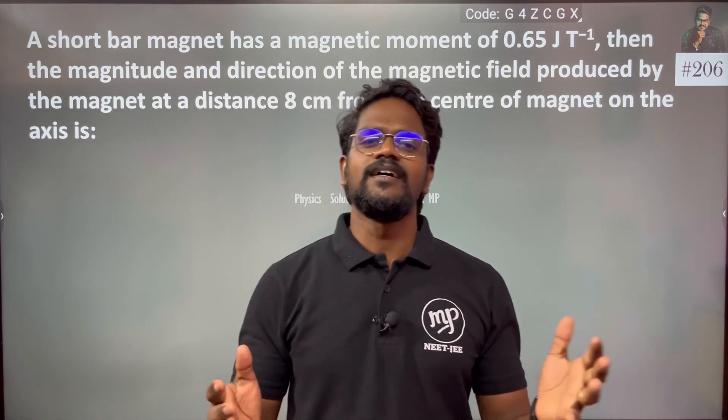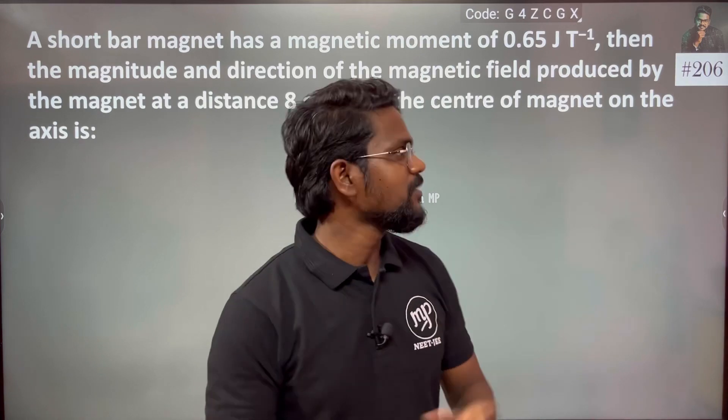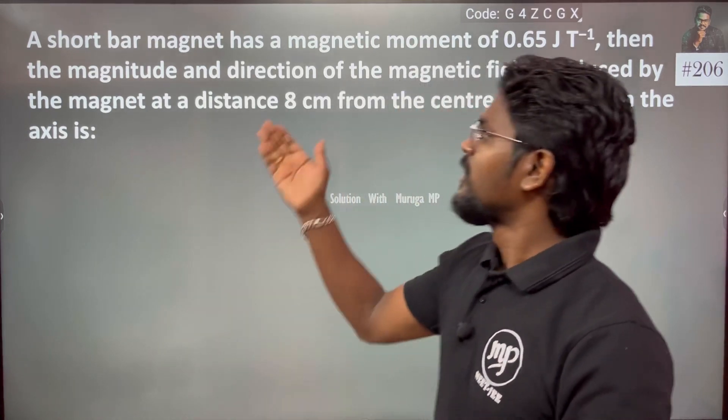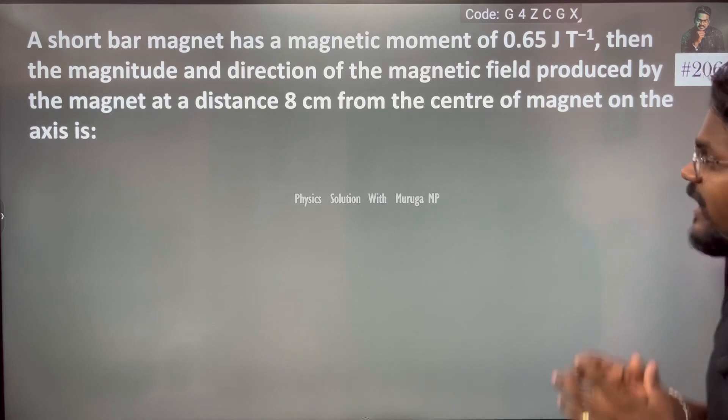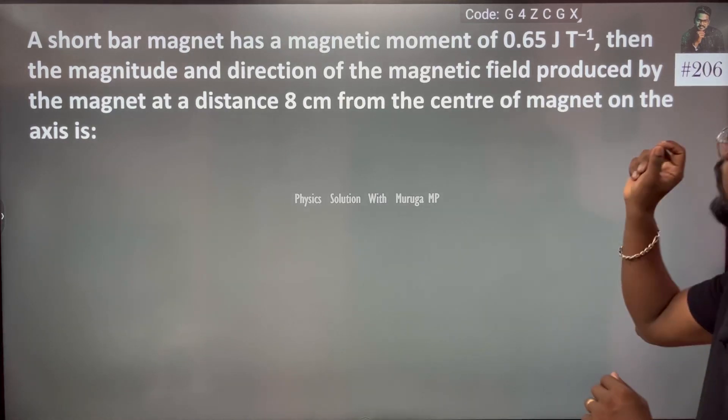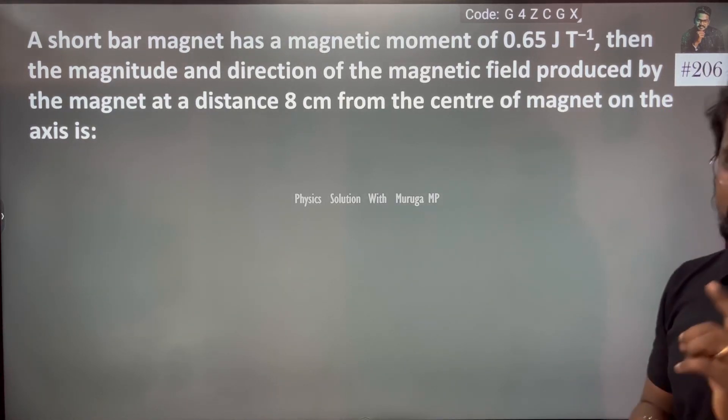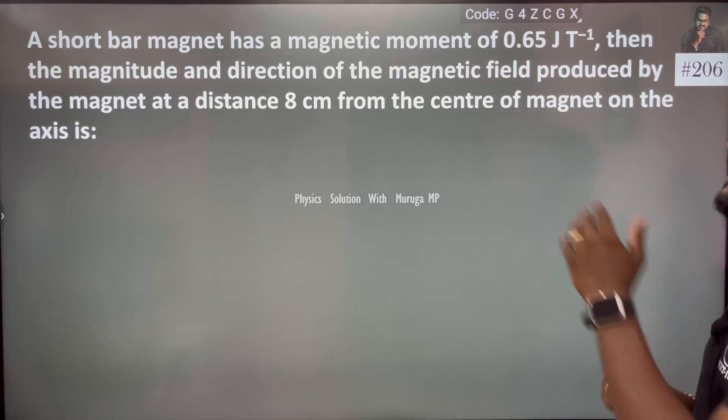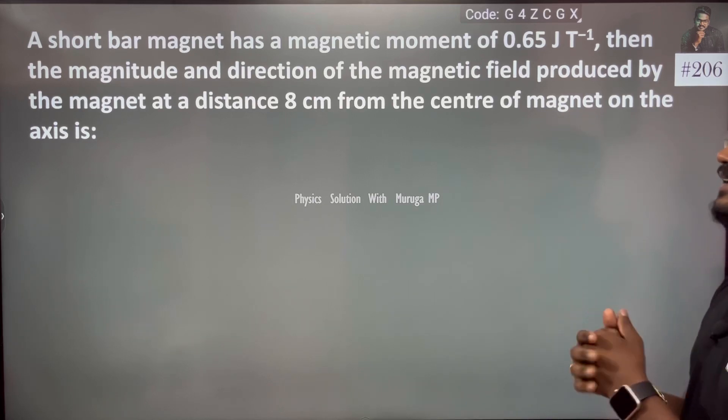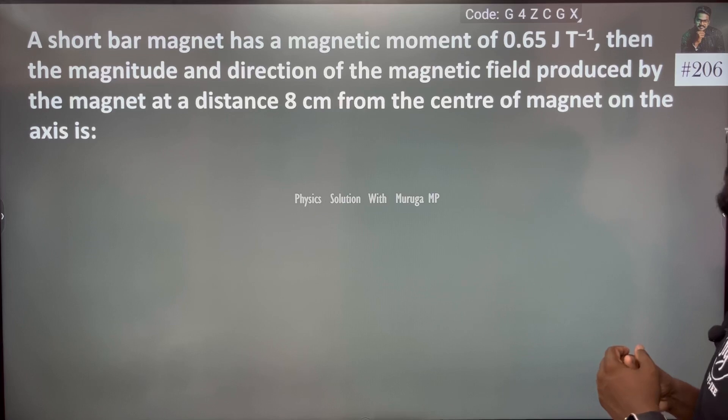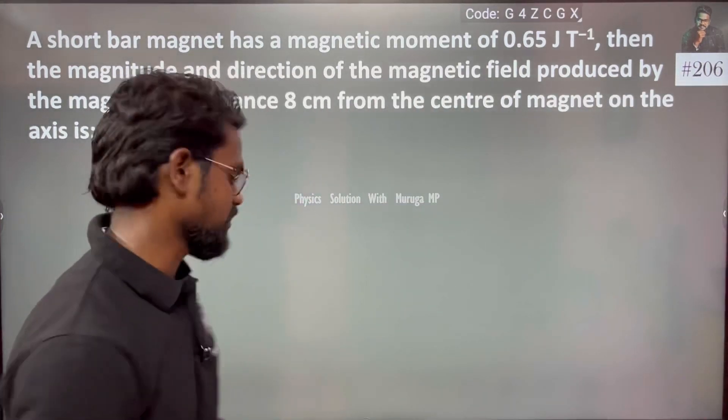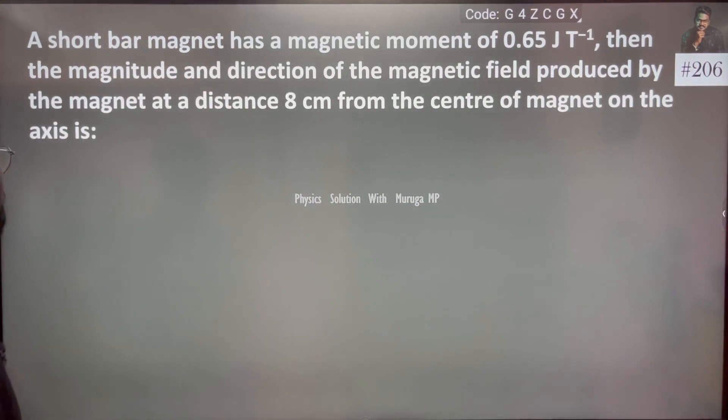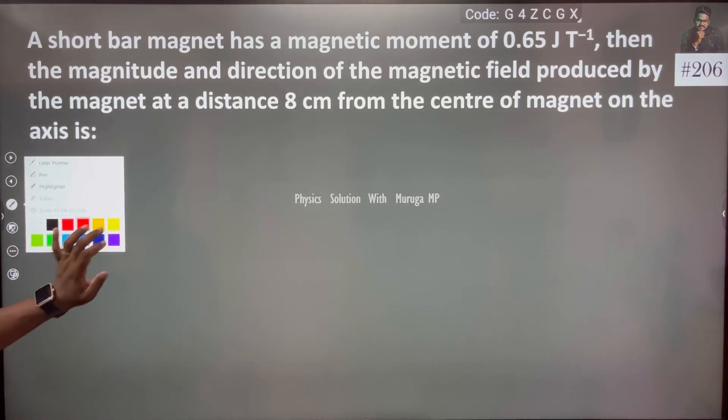Hi everyone, question number 206. A short bar magnet has a magnetic moment of 0.65 J·T⁻¹. Then the magnitude and direction of the magnetic field produced by the magnet at a distance of 8 centimeters from the center of the magnet on the axis. So it's very simple, first let's talk about a short bar magnet.